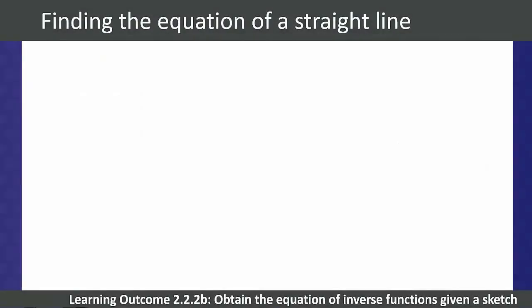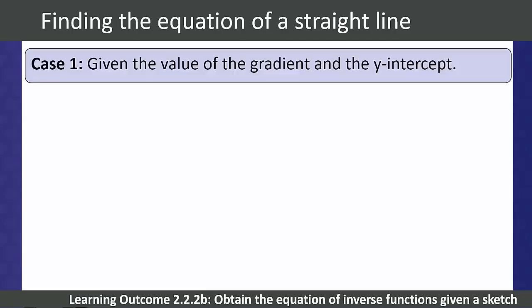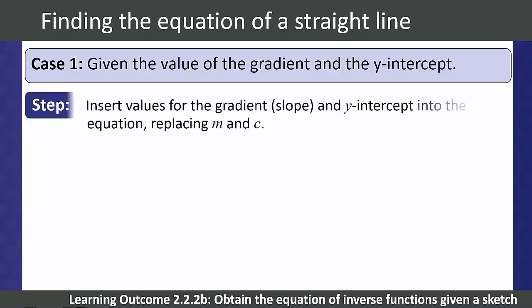We will look at four ways in which students could be expected to find the equation of straight line graphs. By level 4, students should be very familiar with all four cases. Case 1: students are given the value of the gradient and the y-intercept. In this case, we substitute the gradient for m and the y-intercept for c.